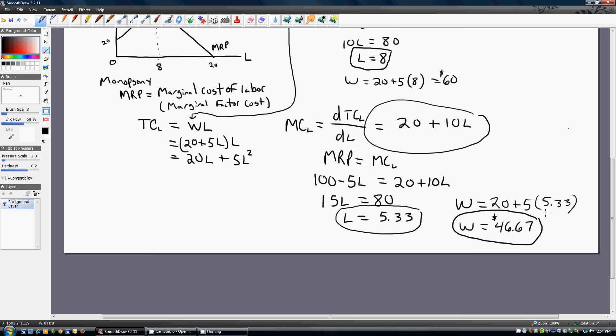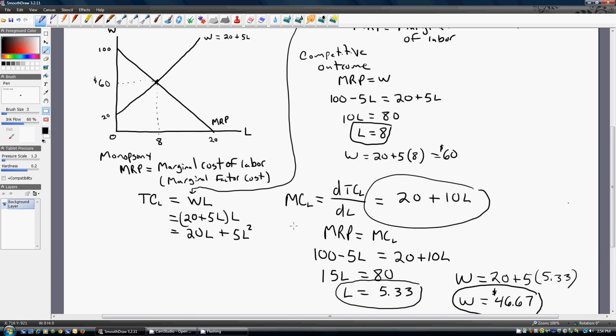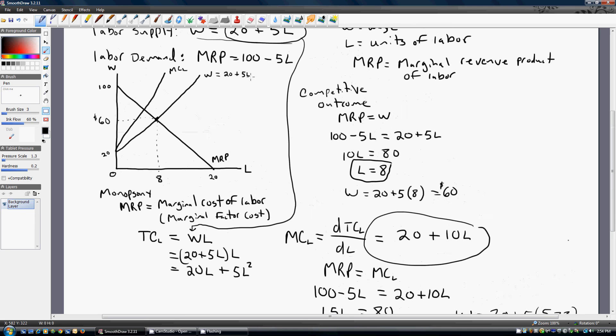The monopsonist is a price searcher, not a price taker. Going to our diagram then, if we were to graph the marginal cost of labor, going to have a slope that's twice as steep. Okay. Go up a little higher. So that's 20 plus 10L.